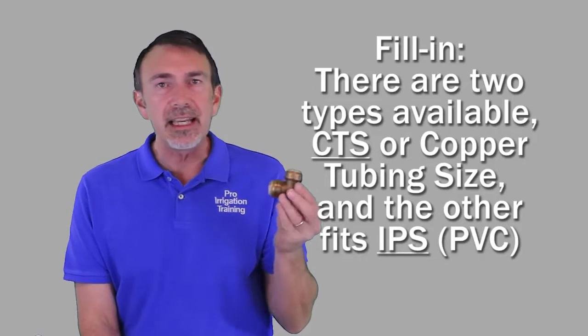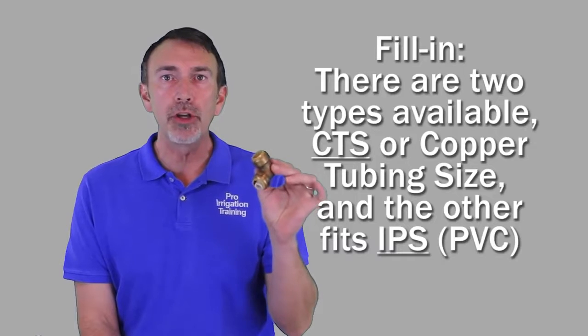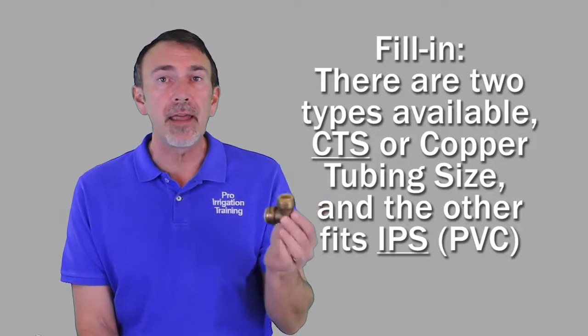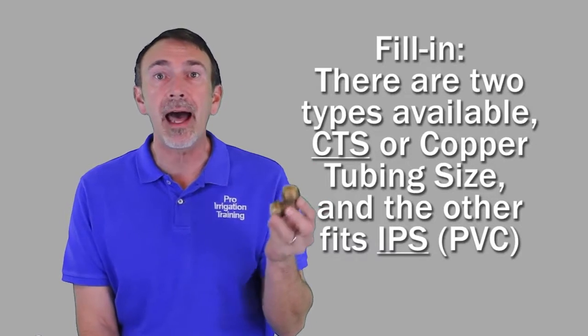This right here is a 90-degree elbow. This particular one was manufactured by SharkBite. This is a CTS, a copper tubing-sized fitting, and they come in both CTS and IPS sizes. Generally, the ones that you're going to find for copper tubing size are made out of brass, and they're a little more durable.